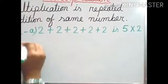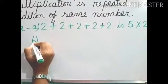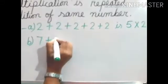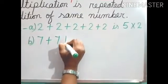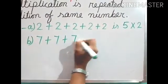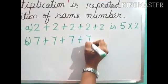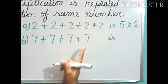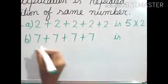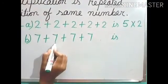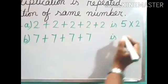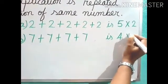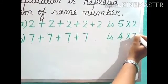Now let us see the next one — number B: 7 plus 7 plus 7 plus 7. Now how can we write it? Let us count — 7 is written how many times? 1, 2, 3, 4. So we can write it as 4 multiplied by 7.